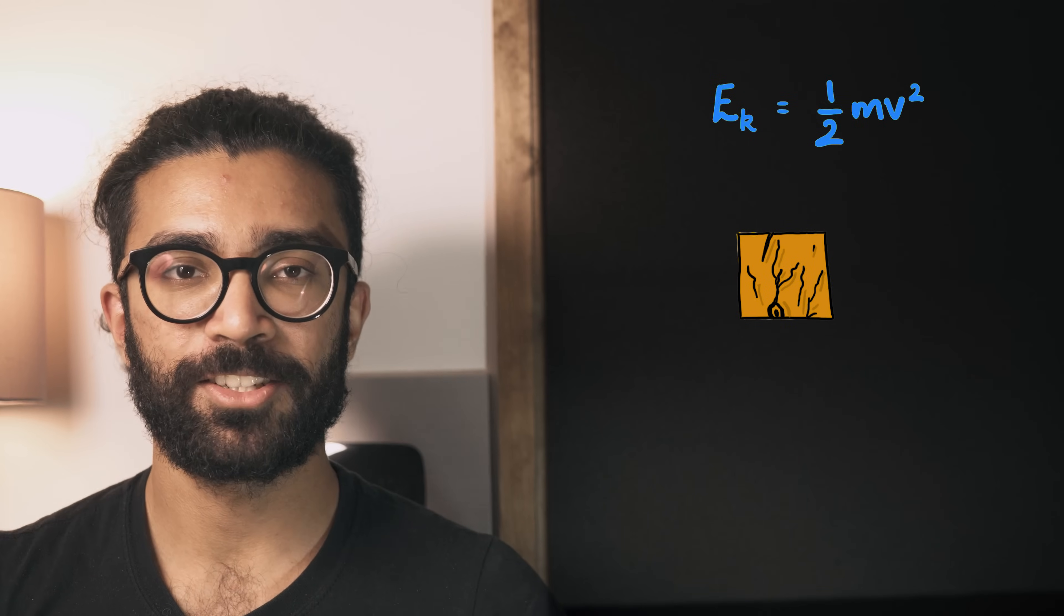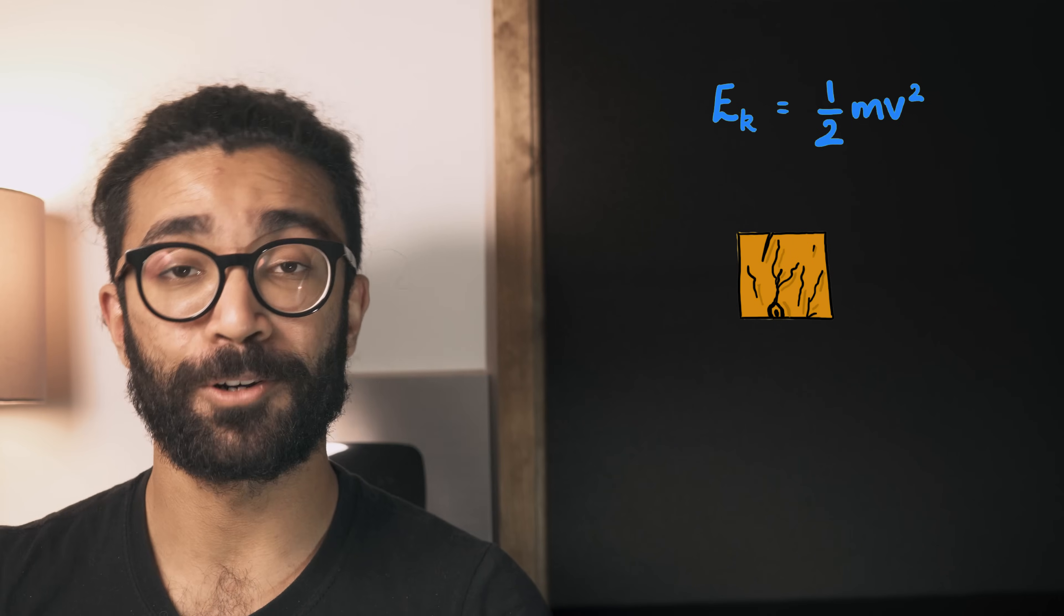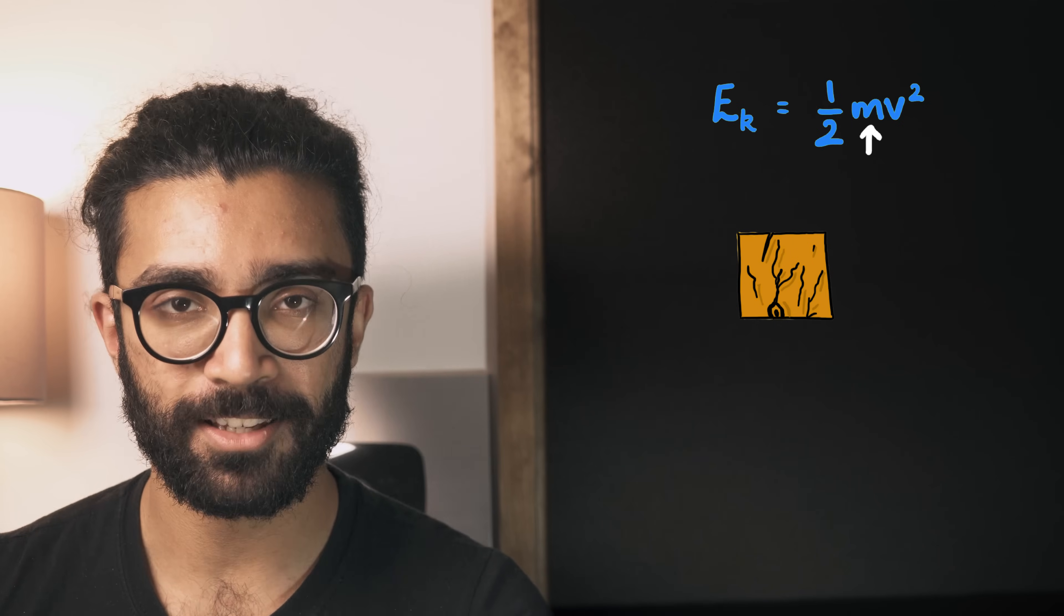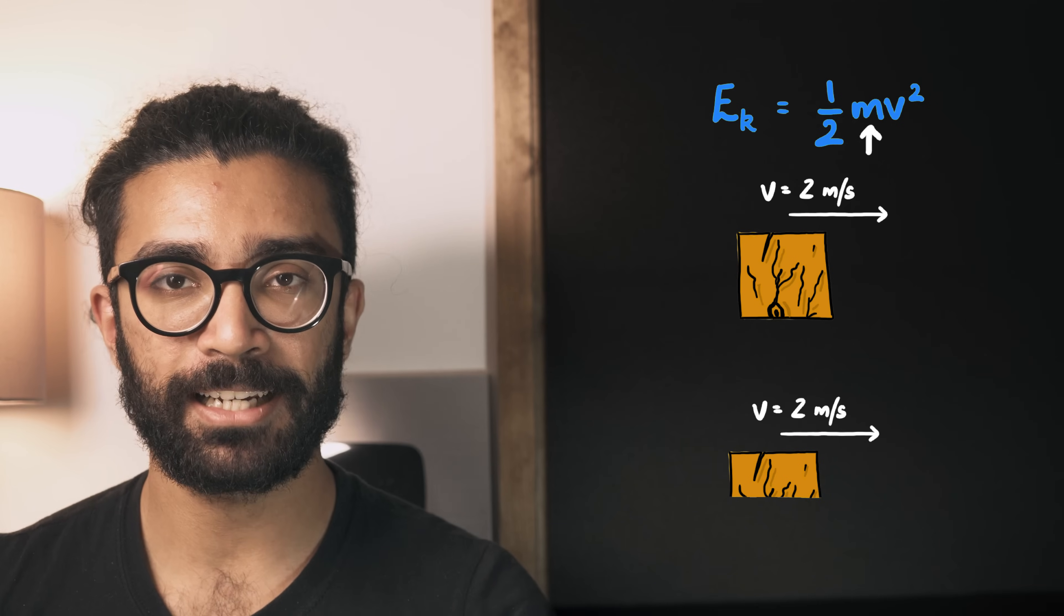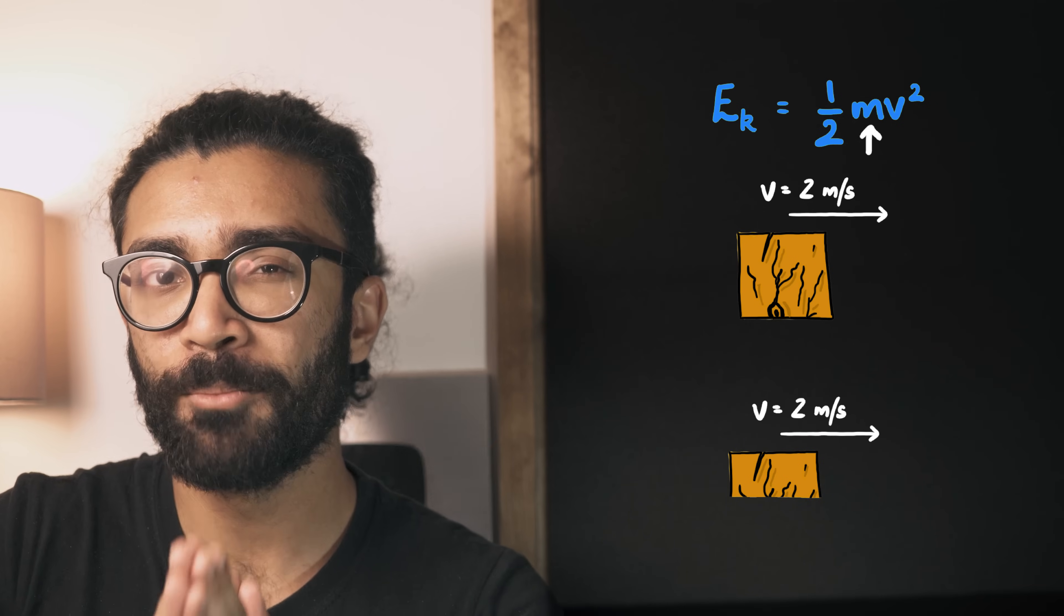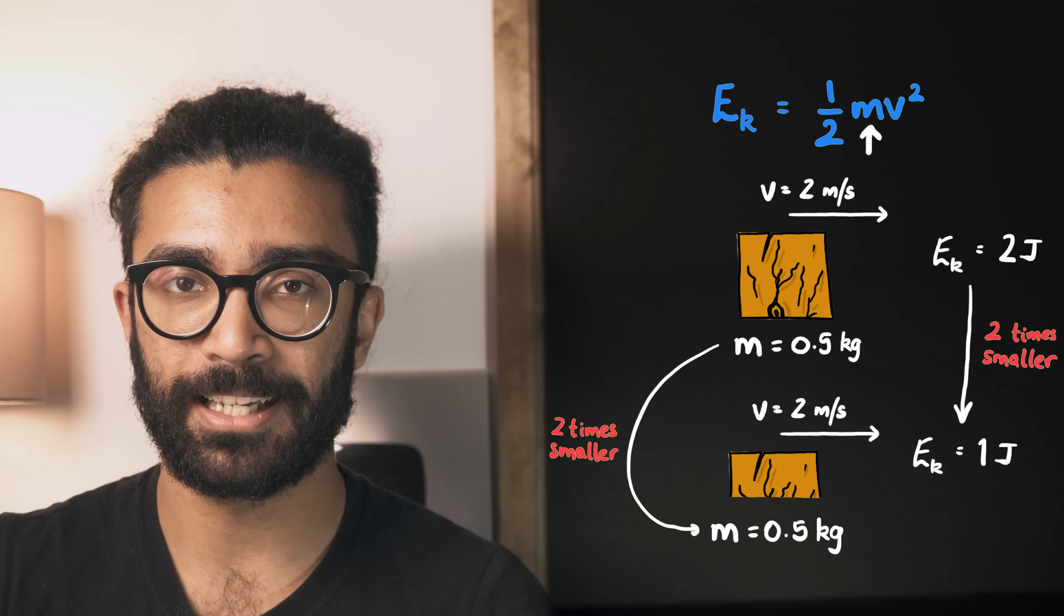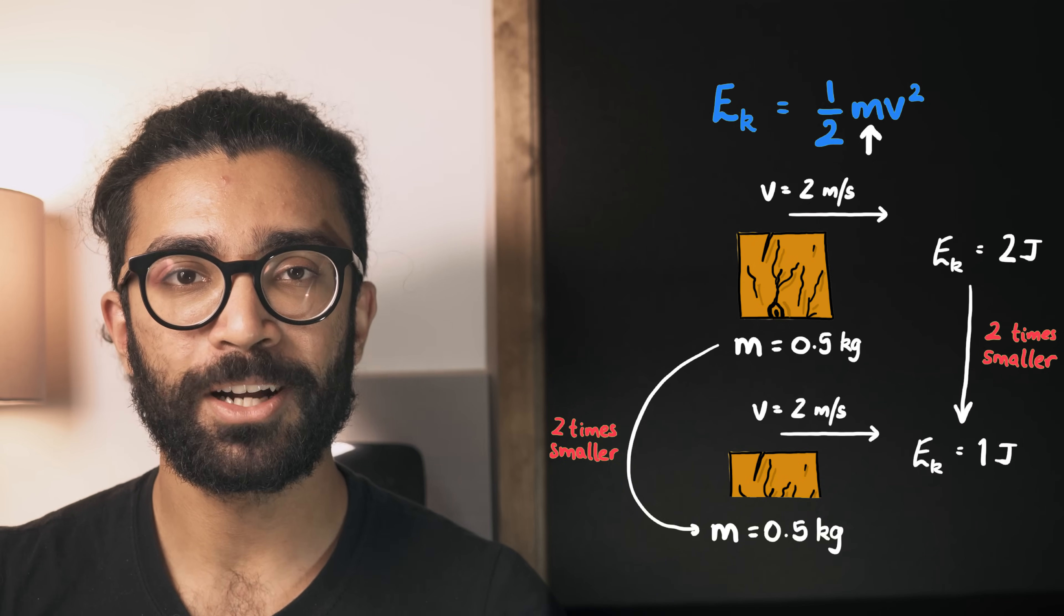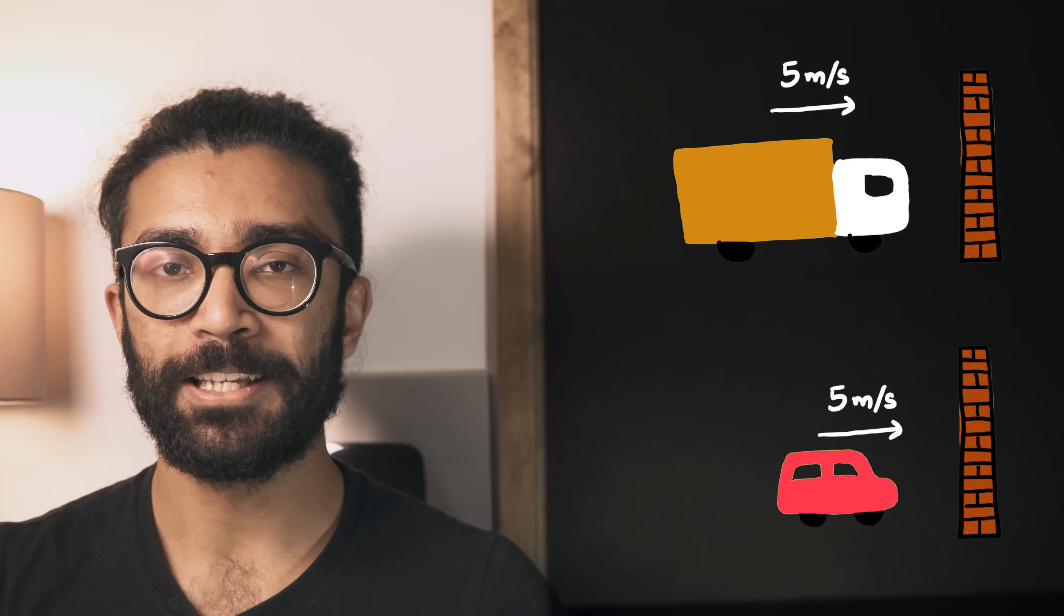But in this equation there is another factor that contributes to the kinetic energy of our object. The object's mass. If we now think about a second block, travelling at exactly the same speed as the first, but with half the mass, then this second block will have half the kinetic energy of the first block. Coincidentally, this is why a big truck or lorry travelling at the same speed as a small car is more dangerous. It has more mass and therefore more kinetic energy to transfer if it were to crash into something.